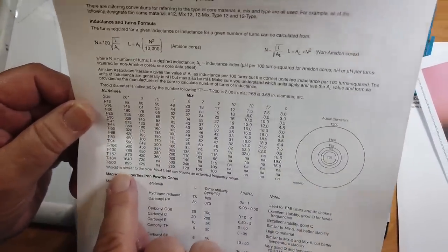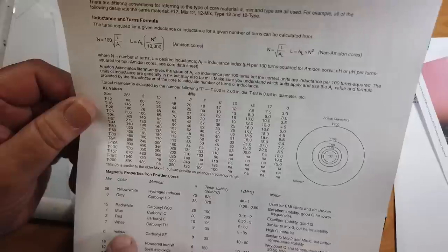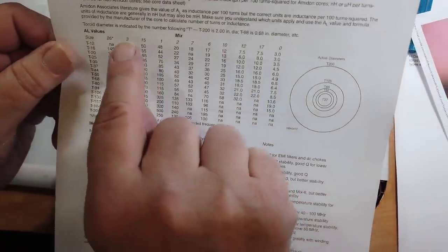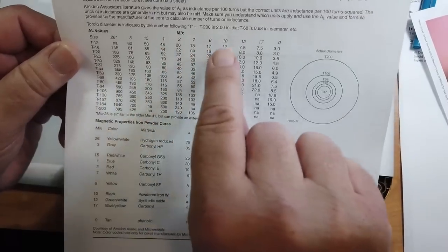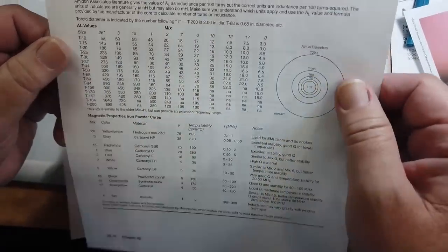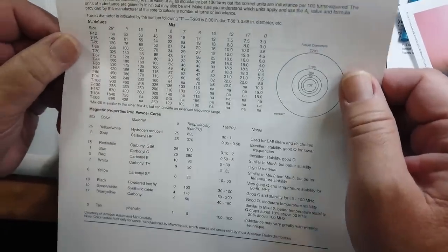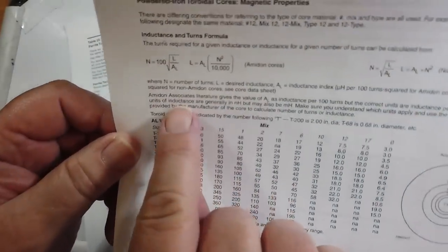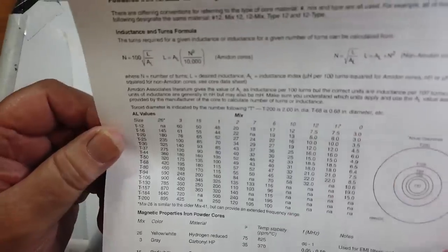The sizes are T12 to T200. And mix 26 right here. It makes reference to a mix 41. Mix 3, 15, 1, 2, 7, all different kinds of mixes here. And this is for a particular manufacturer, Amidon Associates.